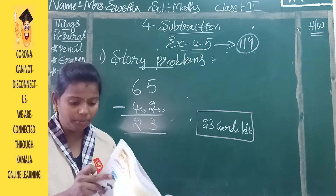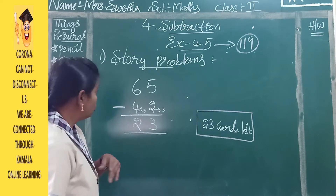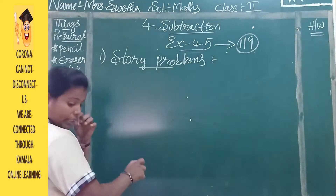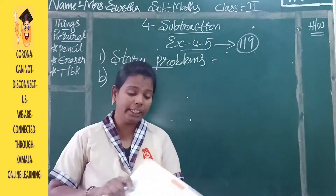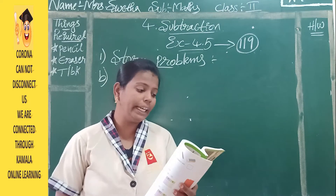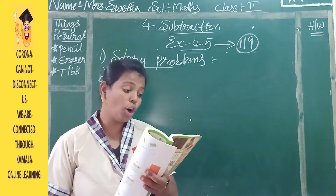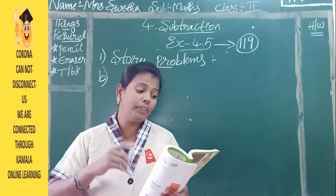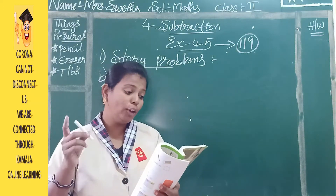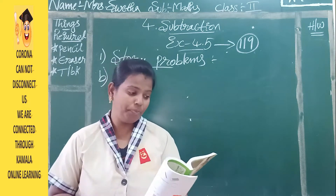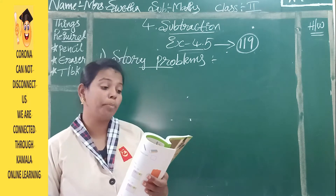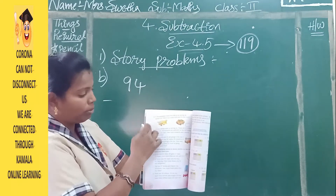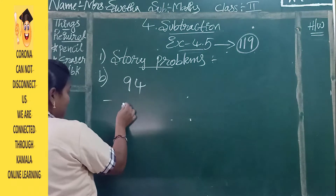Now turn the page. The second problem: a toy airplane costs 94 rupees and a toy racing car costs 67 rupees. Which toy costs more and by how much? From these two, which toy has more cost — the airplane or the racing car? By seeing the numbers we can say the airplane costs more. But how much more? We have to find that by doing subtraction: 94 minus 67.